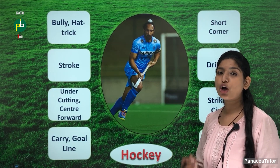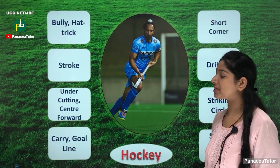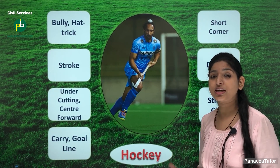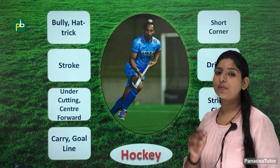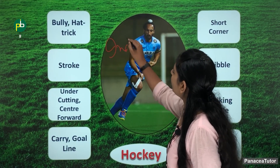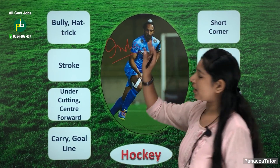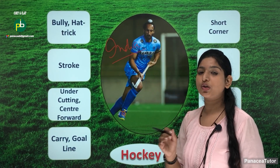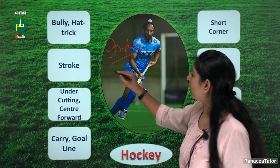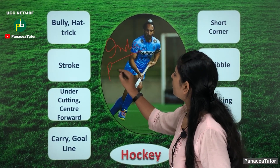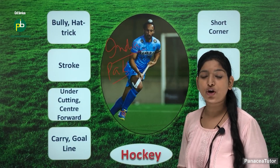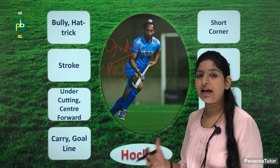The next sport is hockey. First of all, hockey — which country has it as a national sport? This is India's national sport. That is hockey. Besides, Pakistan also has hockey as its national sport. So hockey is the national sport of both India and Pakistan.